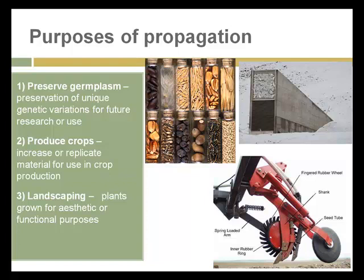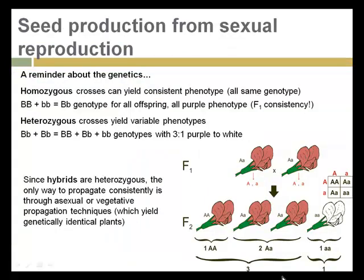All of these are important purposes of seeds. As a little review from last week: homogeneous crosses yield a consistent phenotype — all the plants look the same in the F1 generation — but when those plants are crossed with each other, they yield variable phenotypes in the F2 generation. Since these hybrids are heterozygous, the only way to propagate consistently is through use of homozygous seeds, plants, or vegetative propagation, which yields genetically identical plants and is the subject of next week's lecture.